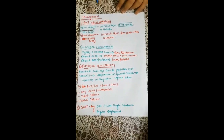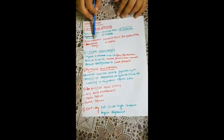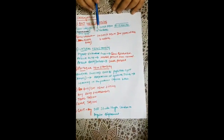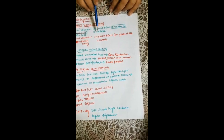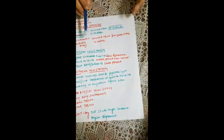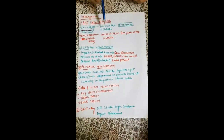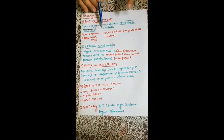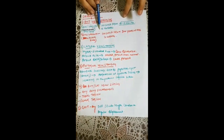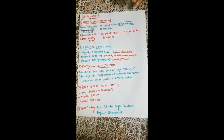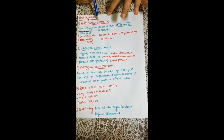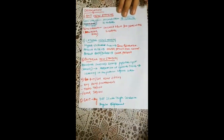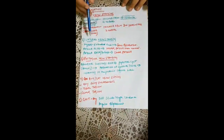The second condition in anterior view standing is genu valgum, also known as knock knees. In children, it is normal from three to four years of age and then straightens up. In adults, however, it is an abnormal condition. These are the key findings in the anterior view standing.